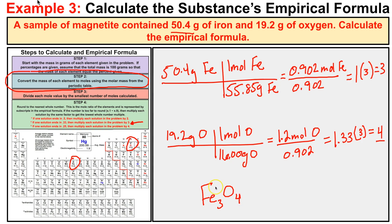So the empirical formula of magnetite is Fe3O4. That's how we calculate empirical formulas! If you like what you see, click the button in the bottom right corner to subscribe to my channel, and feel free to leave any comments or questions below. I really hope you found this helpful.